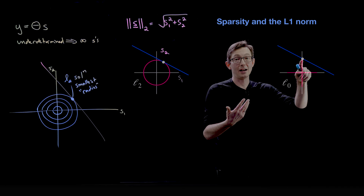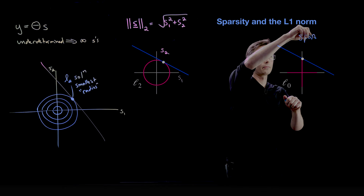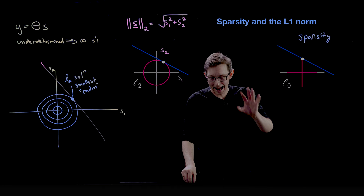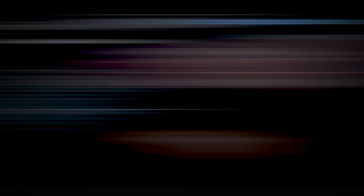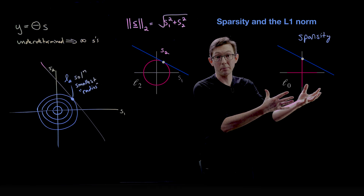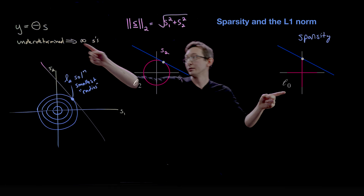The L0 norm promotes sparsity, though it's not technically a mathematical norm — it doesn't satisfy all the conditions a norm requires. But morally we can use it to measure distance from the origin in this L0 metric. The problem is you can't find the minimum L0 norm solution using convex optimization — it's an NP-hard problem.